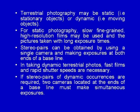Terrestrial photography may be static, that is for stationary objects, or dynamic for moving objects. For static photography, slow fine-grained high-resolution films may be used and pictures taken with long exposure times. Stereo pairs can be obtained by using a single camera and making exposures at both ends of a baseline. In taking dynamic terrestrial photographs, fast films and rapid shutter speeds are necessary. If stereo pairs of dynamic occurrences are required, two cameras located at the ends of a baseline must make simultaneous exposures.